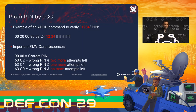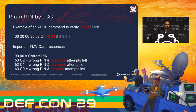What is plain PIN by ICC? It means we can send a command directly to the card to verify a PIN, because the card itself has the PIN in the secure element. We can prepare a command and send it to the card, and the card can answer in different ways. 9000 means correct PIN. 63-C2 means wrong PIN with two more attempts left. 63-C1 means wrong PIN with one attempt left. 63-C0 means wrong PIN with no more attempts left — meaning the card is going to be PIN-blocked.